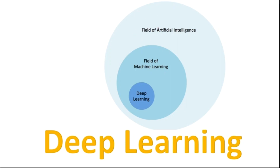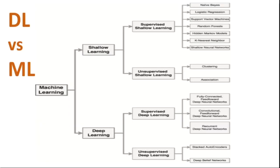We have a whole playground which is artificial intelligence, and within artificial intelligence there is machine learning, and under machine learning we have deep learning. So deep learning and machine learning both basically achieve artificial intelligence. Some of us think that deep learning and machine learning are two different branches, but that's a myth. Machine learning is a whole branch, and under that branch there is shallow learning and deep learning.